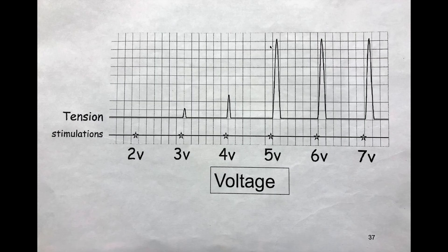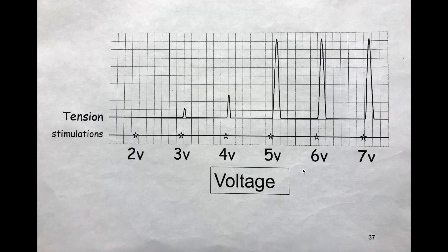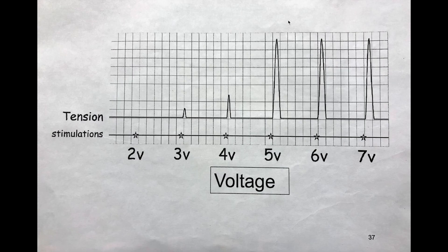Let's look at these peaks. There's something curious going on: volts 5, 6, and 7 have the largest peaks, but they're also the same height. We have one more term — maximal stimulus. If you were to guess which voltage represents maximal stimulus, which number would you say? Hopefully you said 5 volts. Maximal stimulus is the greatest voltage that results in an increase in strength of contraction. At 5 volts, this muscle is maxed out.